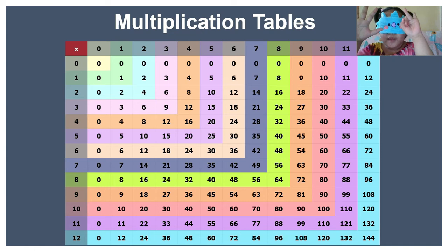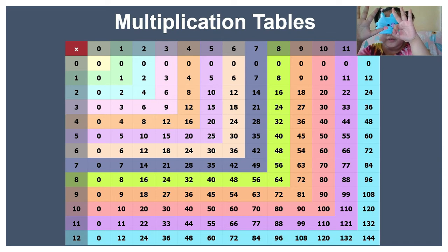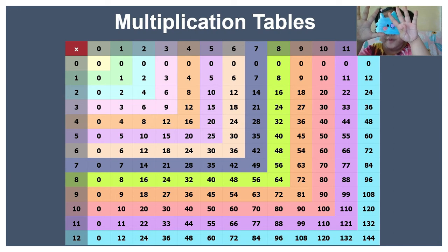5 times 7 equals 35. 5 times 8 equals 40. 5 times 9 equals 45. 5 times 10 equals 50.